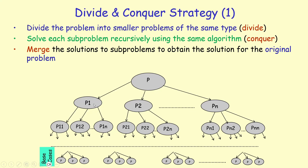Each subproblem is a smaller version of the original problem. P1, P2, and Pn have to have a smaller scale compared to P, but they have to have the same type in terms of formulation. So P1 is the same formulation of the original problem but has a smaller scale. P2 is the same, and Pn is the same.